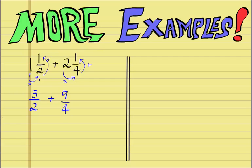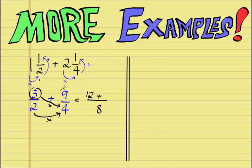Now we follow the same exact rules and first multiply out the denominators. 2 times 4 is 8 — that's our denominator. We then multiply the numerator of the first fraction by the denominator of the second fraction: 3 times 4 is 12. Carry over our addition sign. Then we multiply the 9 by the 2, which equals 18. We simply add the 12 and the 18, which is 30. And we carry our denominator, 8.